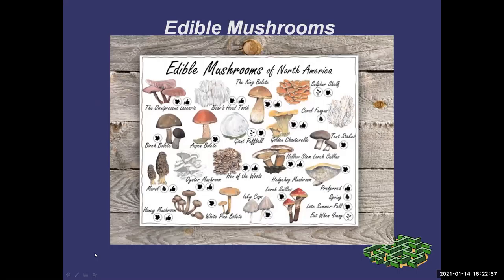Finally, edible mushrooms. We touched on morels, boletes, chicken of the woods, and chanterelles. Also in the bolete family are white pine boletes, and of course honeys. Hen in the woods I'll let you read up on your own. Bear's head tooth is really cool — it has some medicinal properties, shown to slow the onset of Alzheimer's and stimulate nerve growth, and there are clinical trials for that. When cooked, bear's head tooth tastes like crab — pretty amazing.